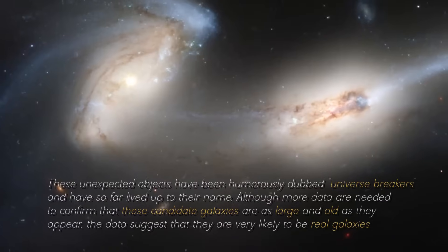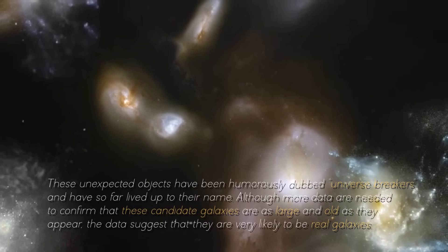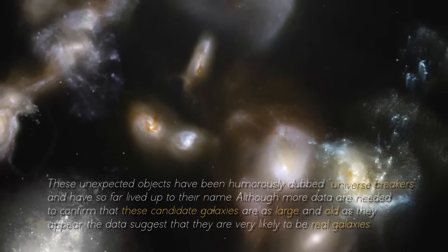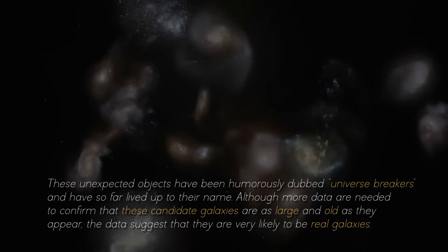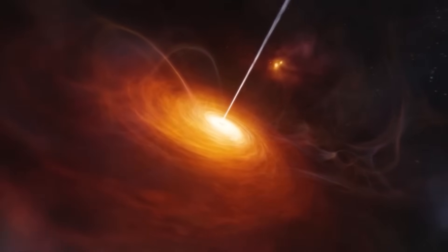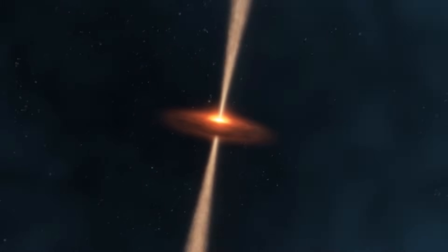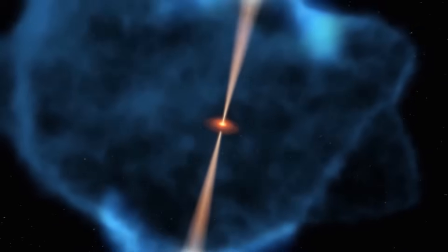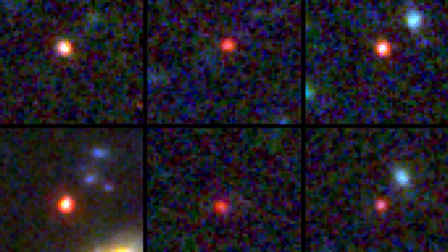These unexpected objects have been humorously dubbed universe breakers and have so far lived up to their name. Although more data are needed to confirm that these candidate galaxies are as large and old as they appear, the data suggests they are very likely to be real galaxies. The amount of mass discovered implies that the known mass of stars at this stage of the universe is up to 100 times larger than previously thought. Although the sample size is small, it is still a remarkable difference.